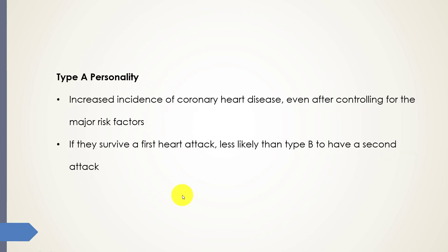The Type B — I like to describe him as the California surfer. That's the individual that can't be bothered, he's not worrying about deadlines. Basically, he does things on his own terms and during his own time, and he's not worried. We know that the Type A personality will have an ongoing increased incidence of coronary heart disease even after controlling for the major risk factors, and that is of course due to the hostility in their personality.